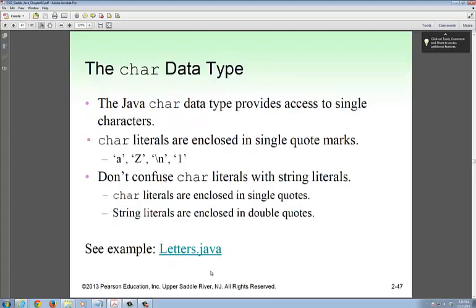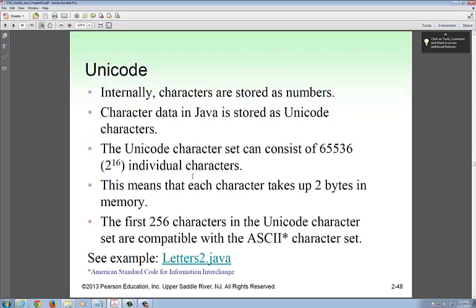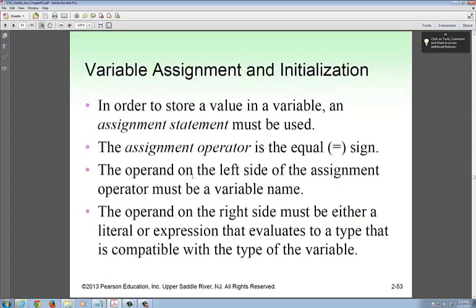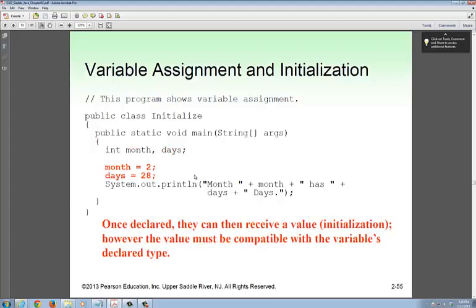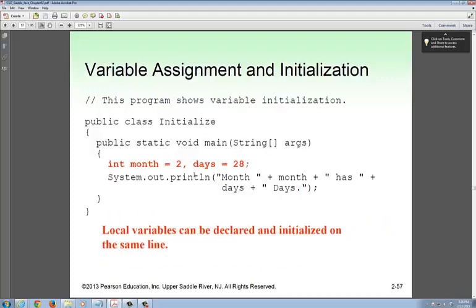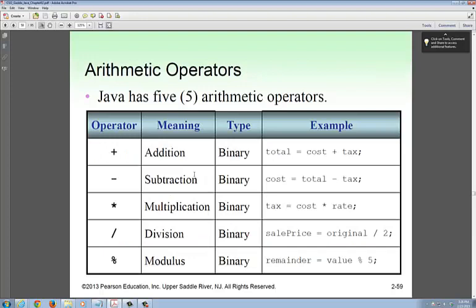Next, assignments and operators. There's an order of operations. There are five arithmetic operators. The first four should be self-explanatory. The fifth one is modulus, which is the remainder.